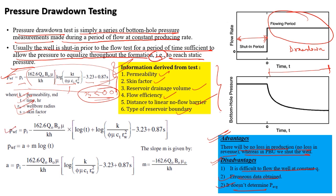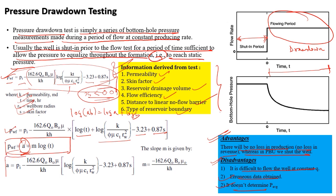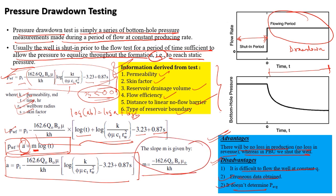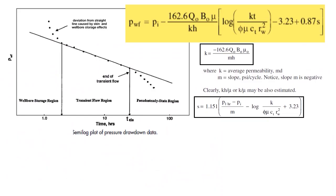This equation can be written as a straight-line equation: P_wf = P_i − 162.6·Q·μ·B/(K·h) · [log t + log(K / (φ·μ·C_t·r_w²)) − 3.23 + 0.87·S]. The intercept A and slope m = −162.6·Q·μ·B/(K·h) define the line. An important point: the slope for a drawdown test is negative, whereas for a pressure buildup test the slope is positive.